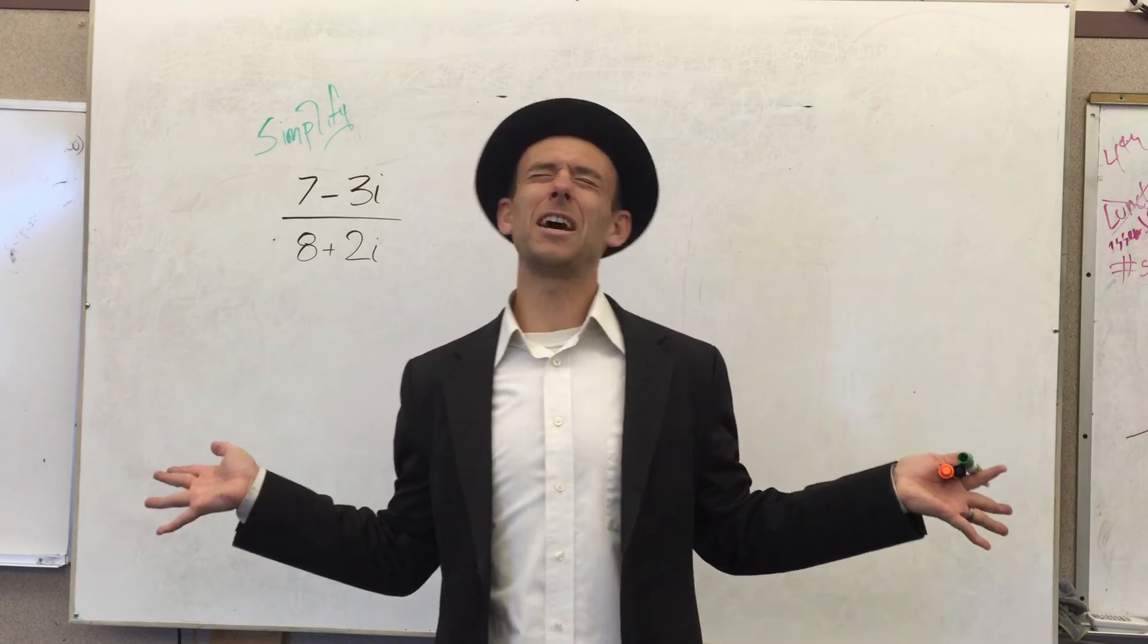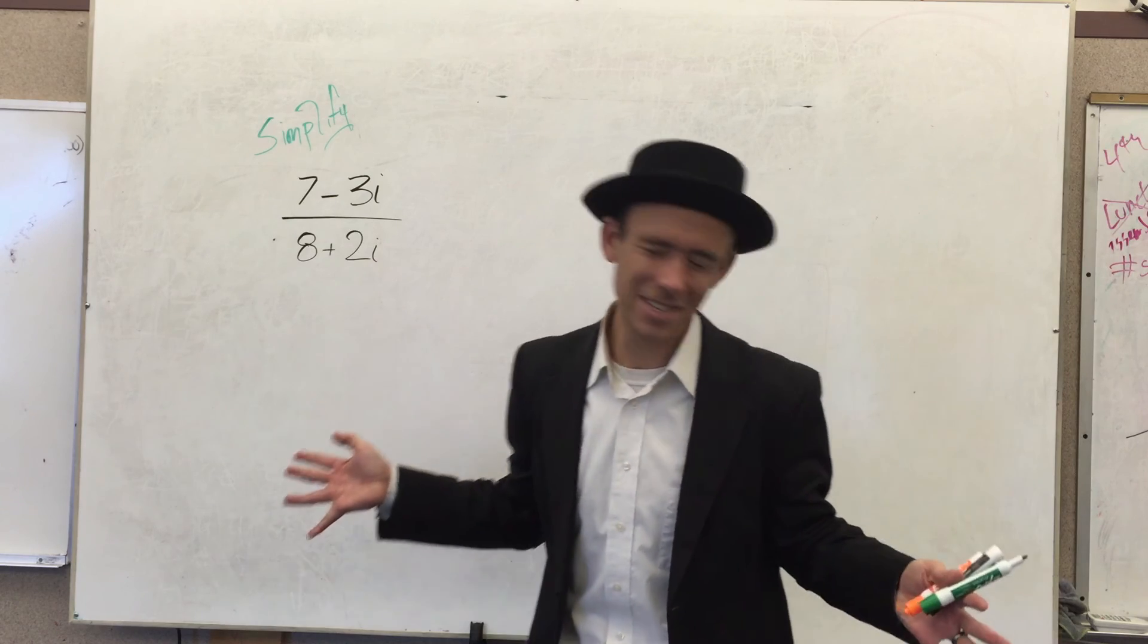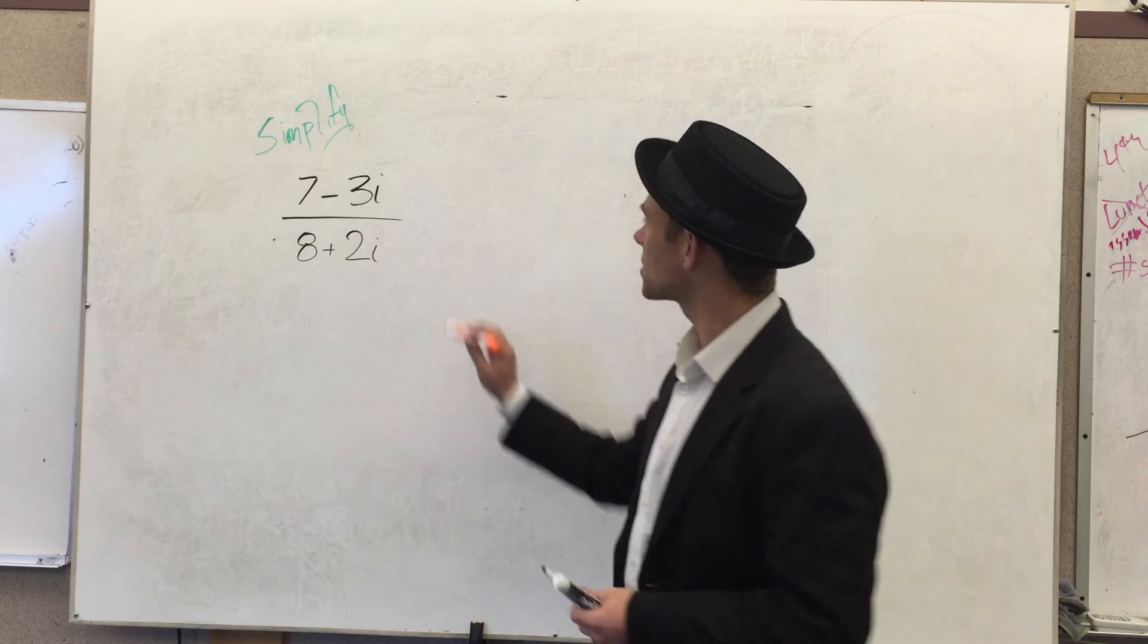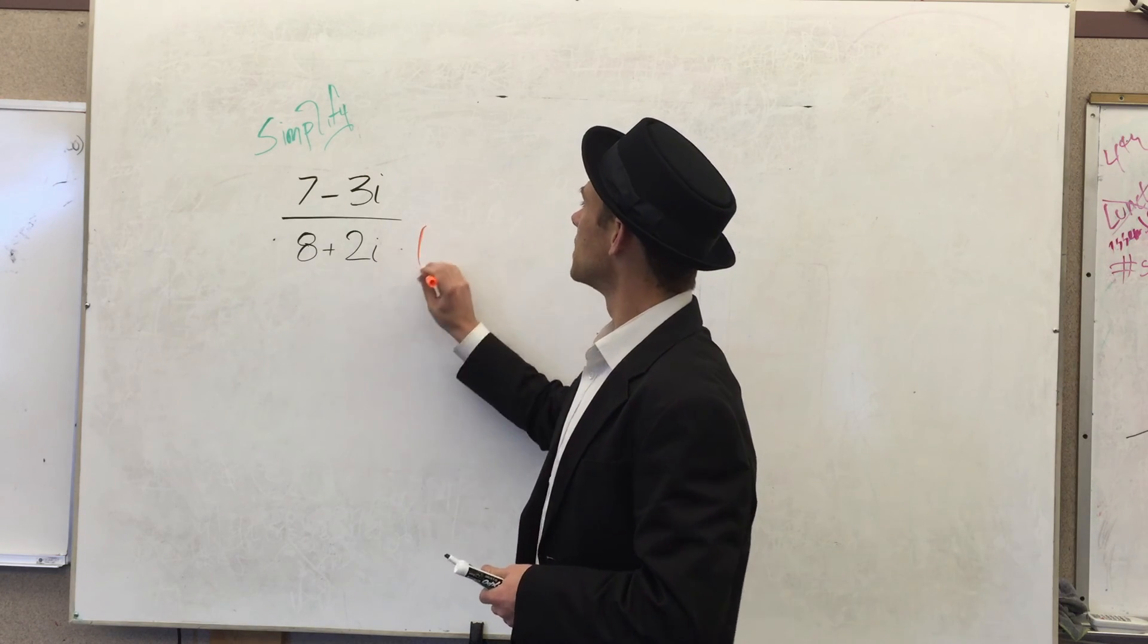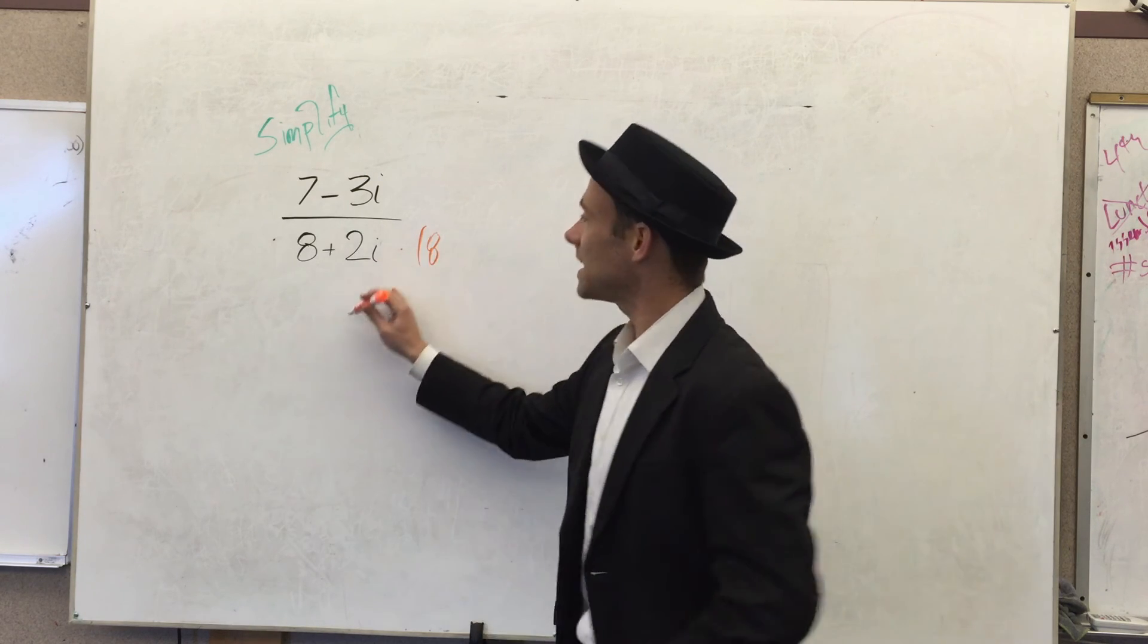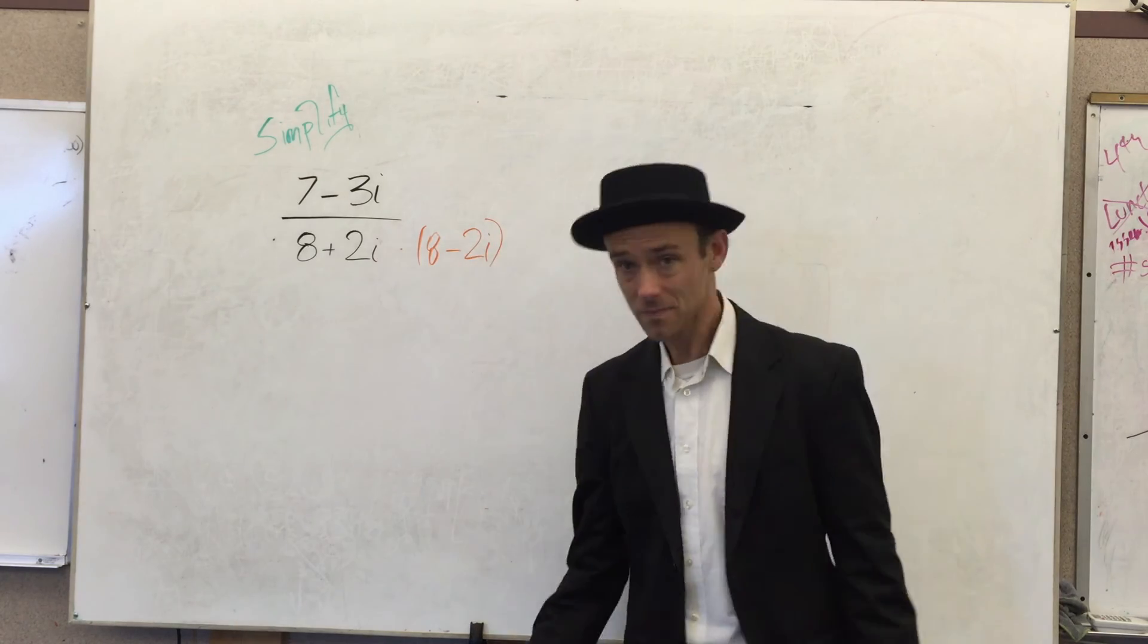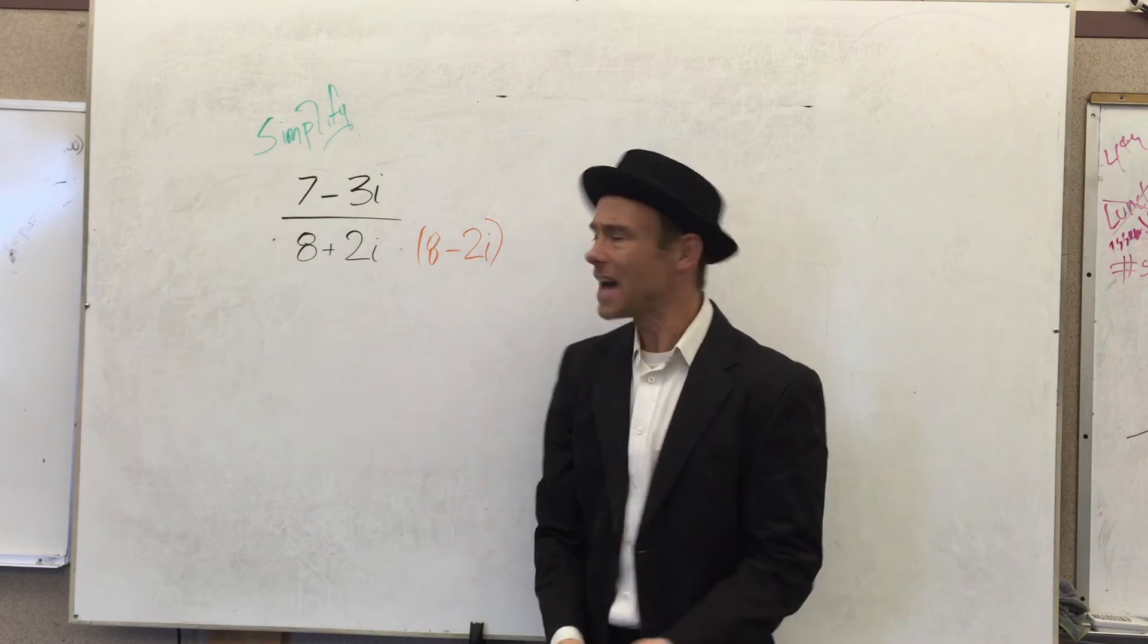I'm going to show you how you do it, people. Here you go. If you want to make that disappear, which you do, you multiply it by what's called its complex conjugate. So we're going to multiply that by 8 minus 2i.